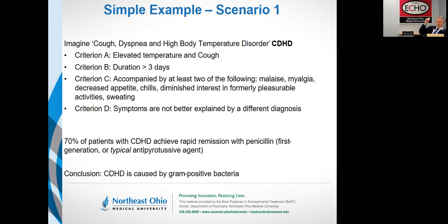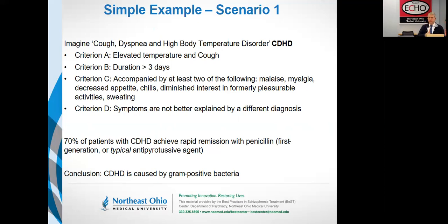Let me hammer home that way of thinking and introduce you to the concept of pharmacotype by imagining a world in which we don't know about pneumonia — we don't have that as an official diagnosis. Imagine we approach pneumonia the way the American Psychiatric Association would approach anything else. We know that there's a syndrome whereby people have high temperatures and coughs, so we come up with a name: cough dyspnea and high body temperature — CDHD. We elaborate some criteria so that we'll have great reliability in who gets assigned this diagnosis of CDHD.